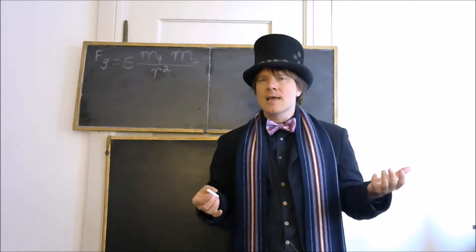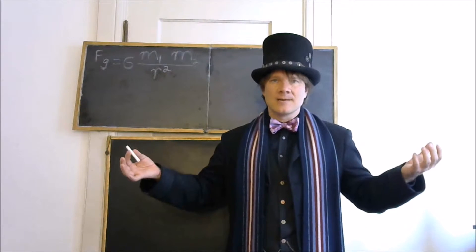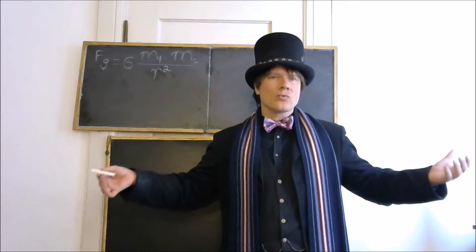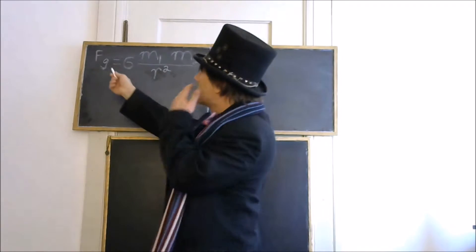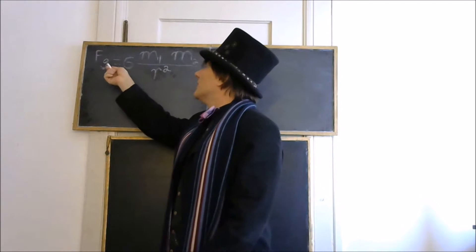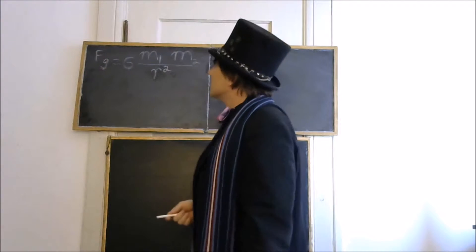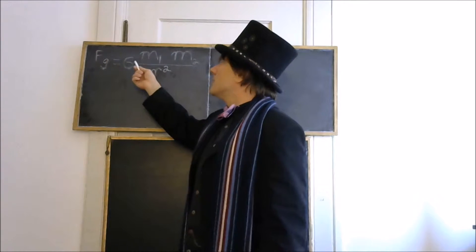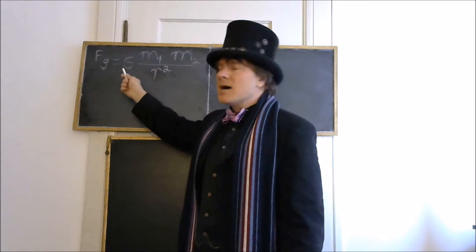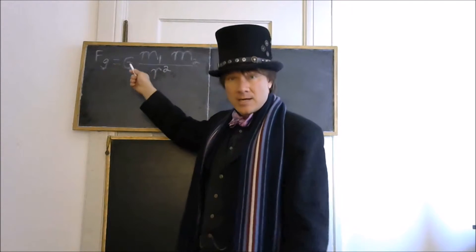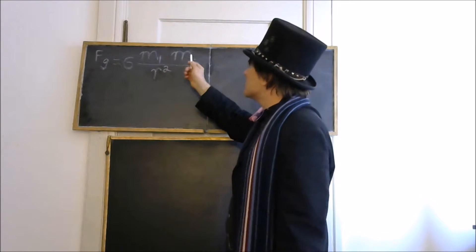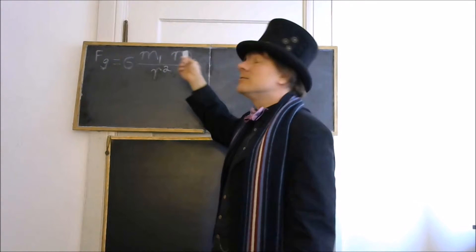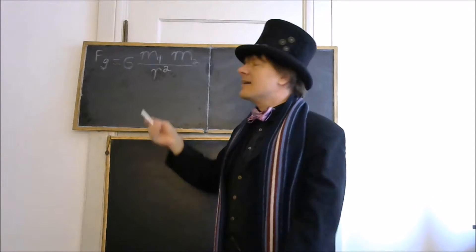The inverse part means that as the distance increases, the gravitational force will decrease. So this is the force of gravity, Fg for force of gravity, and this is the universal gravitational constant here, G. So that's a constant. And this is the mass one, and this is the mass two, so we have two objects interacting here.